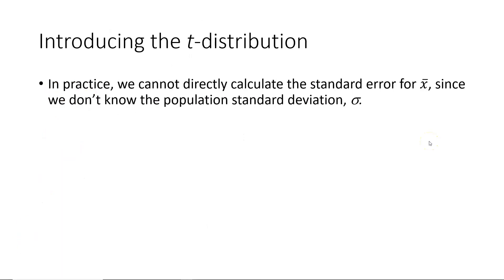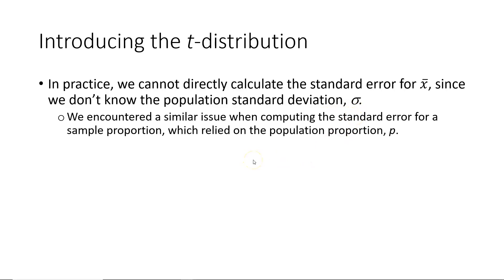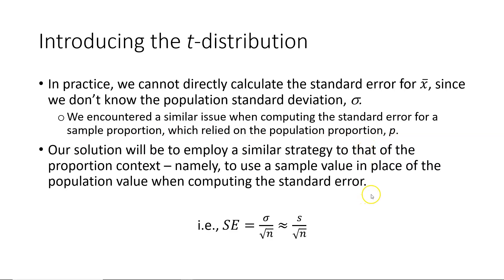In practice we can't directly calculate the standard error for the sampling distribution of sample means because we don't know the population standard deviation sigma. We encountered a similar issue when computing the standard error for a sample proportion, which relied on the population proportion p. Our solution is to use the sample value in place of the population value — substituting the sample standard deviation in place of the population standard deviation in the formula.